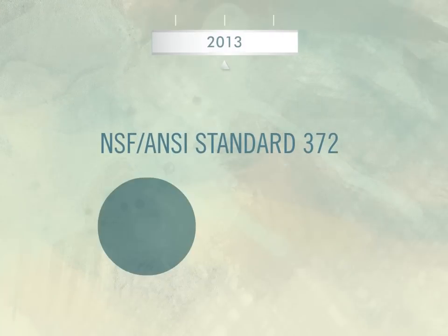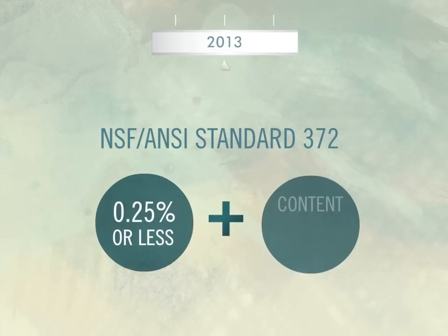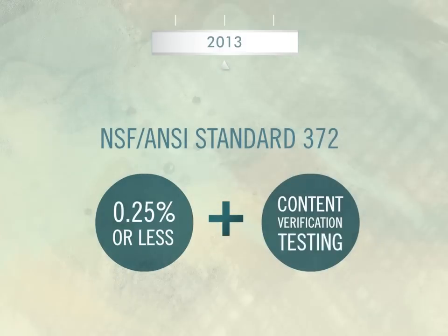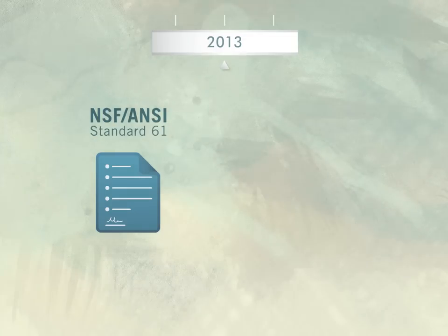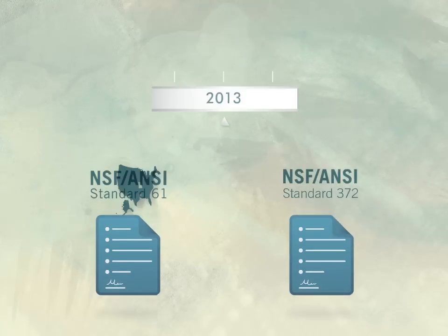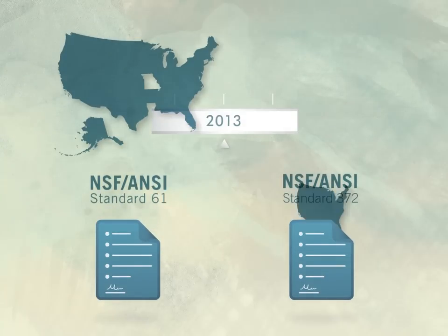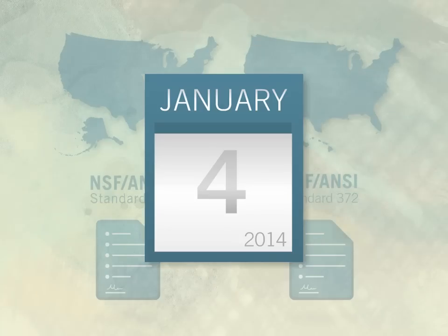The new NSF ANSI Standard 372 picks up where Annex G left off — again a weighted average lead content of 0.25 percent or less — but adds content verification testing. So now we've got a revised Standard 61 and a new Standard 372: the first the law in most states, the second the law in every state, as federal law, to comply with the new Safe Drinking Water Act when it goes into effect on January 4th, 2014.